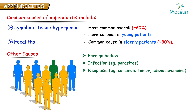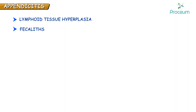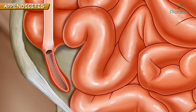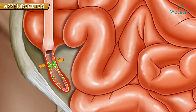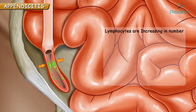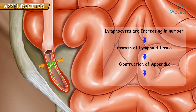Now let's understand lymphoid tissue hyperplasia and fecolith in detail. Lymphoid tissue is a dense collection of lymphocytes. The lymphoid tissue grows with age, and in the appendix it reaches its maximum size in adolescence — that is normal physiology. Sometimes, when there is hyperplasia of lymphocytes, the lymphoid tissue outgrows, which may lead to obstruction of the appendix. So increasing lymphocytes lead to growth of lymphoid tissue, finally causing obstruction and inflammation of the appendix.